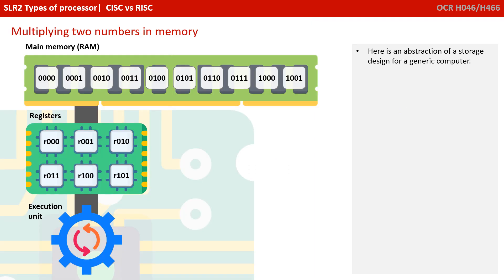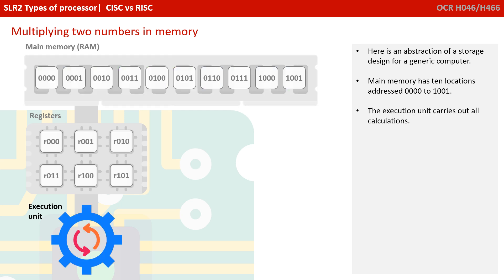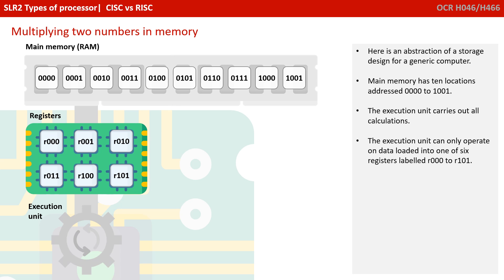Here on the screen is a high level abstraction of a storage design for a generic computer, which will serve the purpose of our illustration. We have main memory at the top with 10 locations addressed from 0000 in binary through to 1001. We also have what we're labelling the execution unit, which carries out all calculations. The execution unit can only operate on data loaded into one of six registers, labelled R000 to R101.